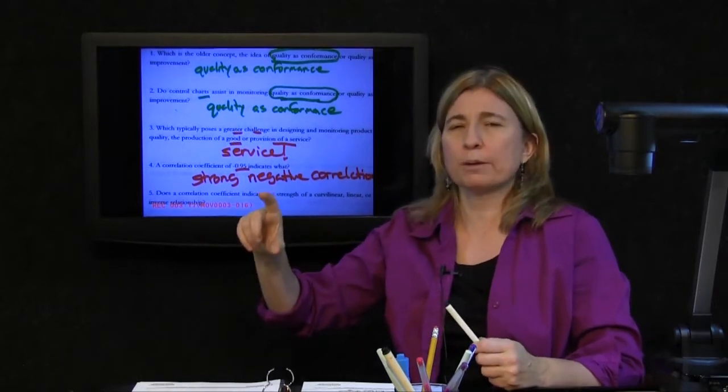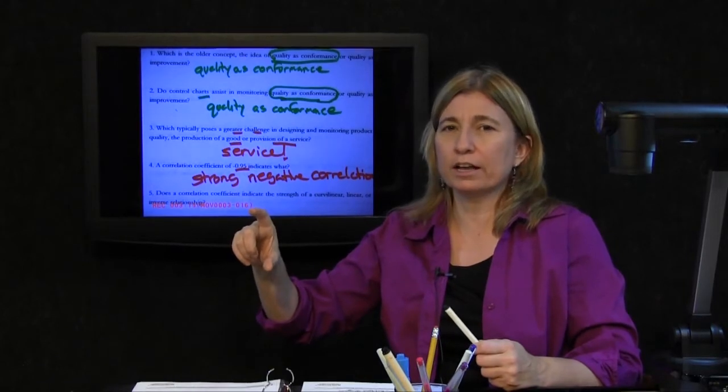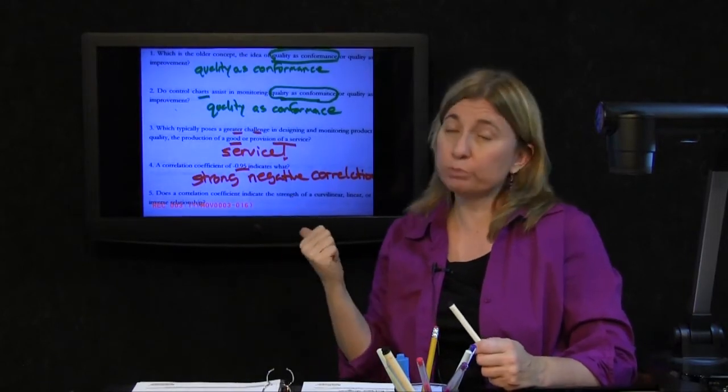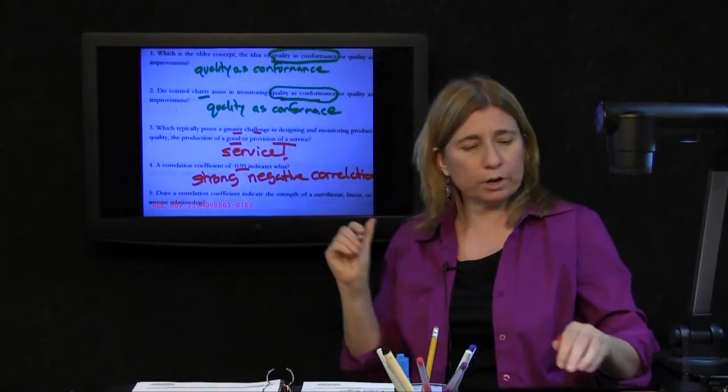Negative 1 represents absolutely perfect negative correlation, the strongest that you can get. And then 1 represents absolutely perfect positive correlation, the strongest it could get at that end. Negative .95 is pretty close to negative 1, so we say very strong negative correlation. Next question.